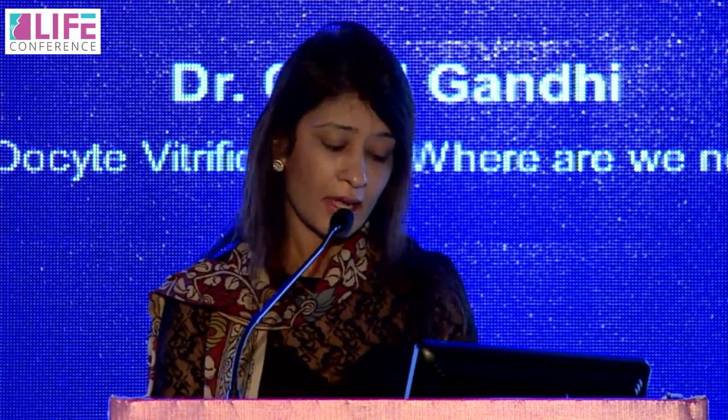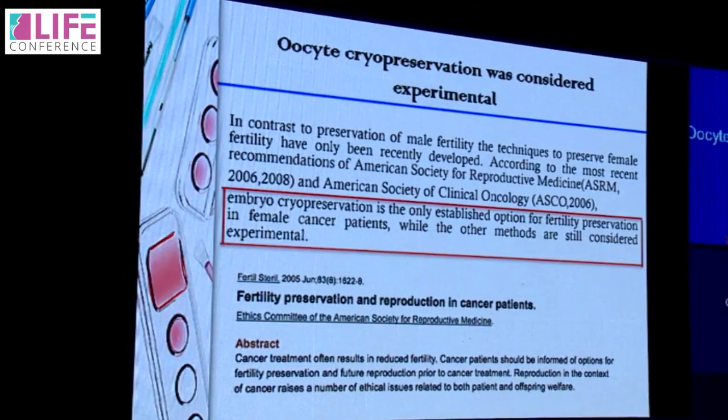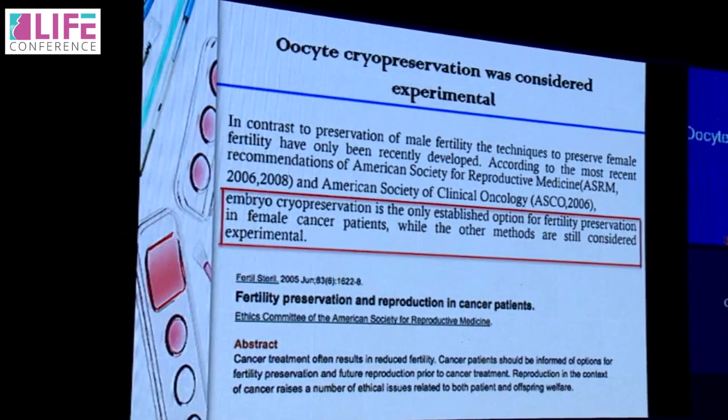Historically, the first reported live birth from a frozen oocyte was reported by Chen in 1986, but there were tremendous difficulties in reliably replicating Chen's success. Oocyte cryopreservation was considered a low-chance option, and early estimates suggested almost 100 eggs were needed to achieve one live birth. So until 2013, the ASRM had considered oocyte cryopreservation as experimental.